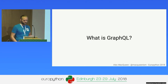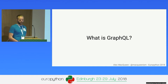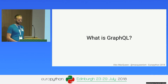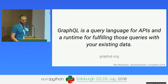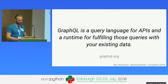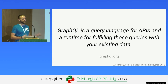So, GraphQL — what is it? It's an API specification, built and open sourced by Facebook in 2015. It's now used by many companies as part of their APIs, including GitHub, PayPal, Twitter, and of course Facebook. But what actually is it? It's a query language for APIs and a runtime for fulfilling those queries with your existing data. That's still fairly vague, but in practice, what does that mean?